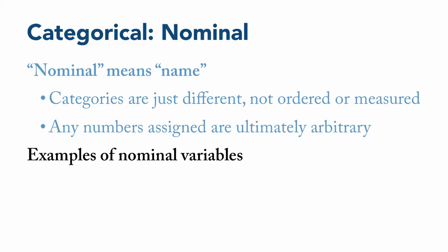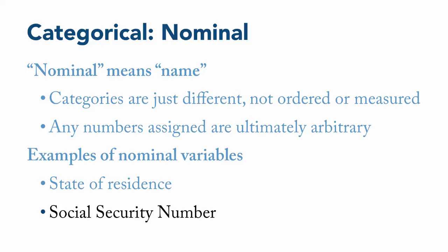Some examples of nominal variables include things like state of residence, where you might give a one to people in Alabama, because that's the first one alphabetically, or one to people in California, because it's got the most people, or one to people in Utah, because that's where I live, and so on. Also, a person's social security number is a nominal variable, where the number is unique to each person and stands in as a substitute for their identity in certain records.